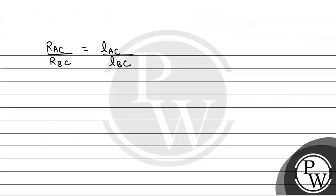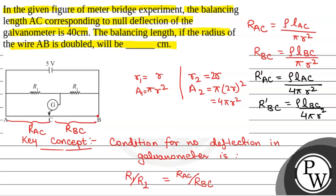When we form the ratio, R1 by R2 will be equal to LAC by LBC, or R dash AC by R dash BC, which equals RAC by RBC. So even if the radius of wire AB is